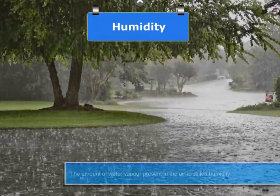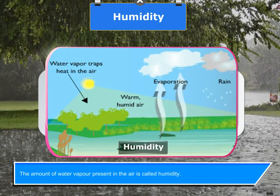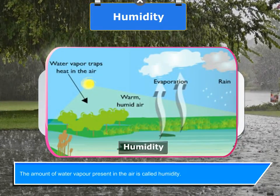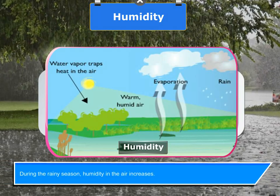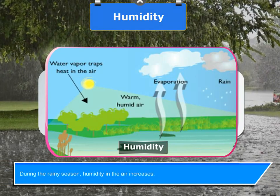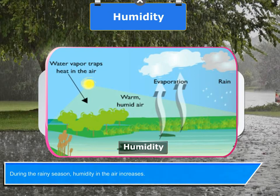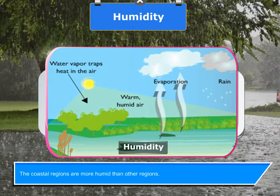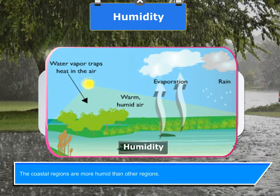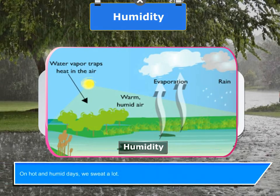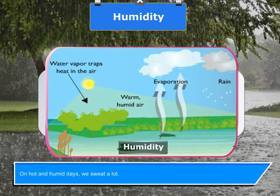The amount of water vapor present in the air is called humidity. During the rainy season, humidity in the air increases. Coastal regions are more humid than other regions. On hot and humid days, we sweat a lot.